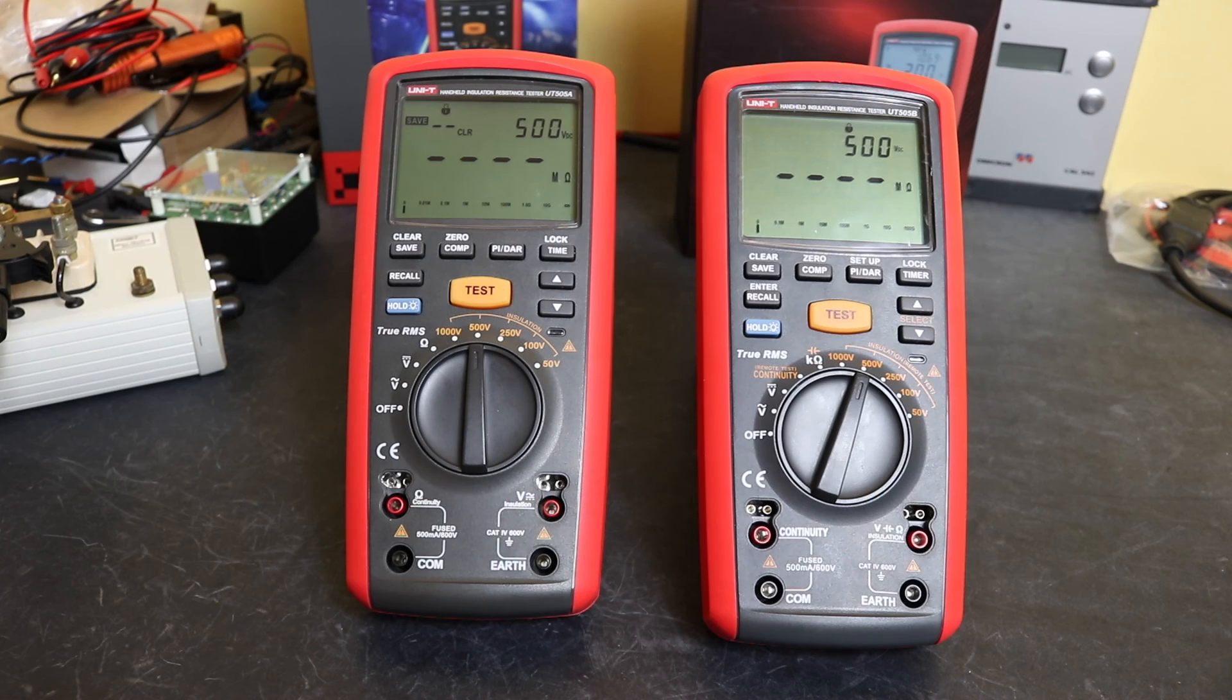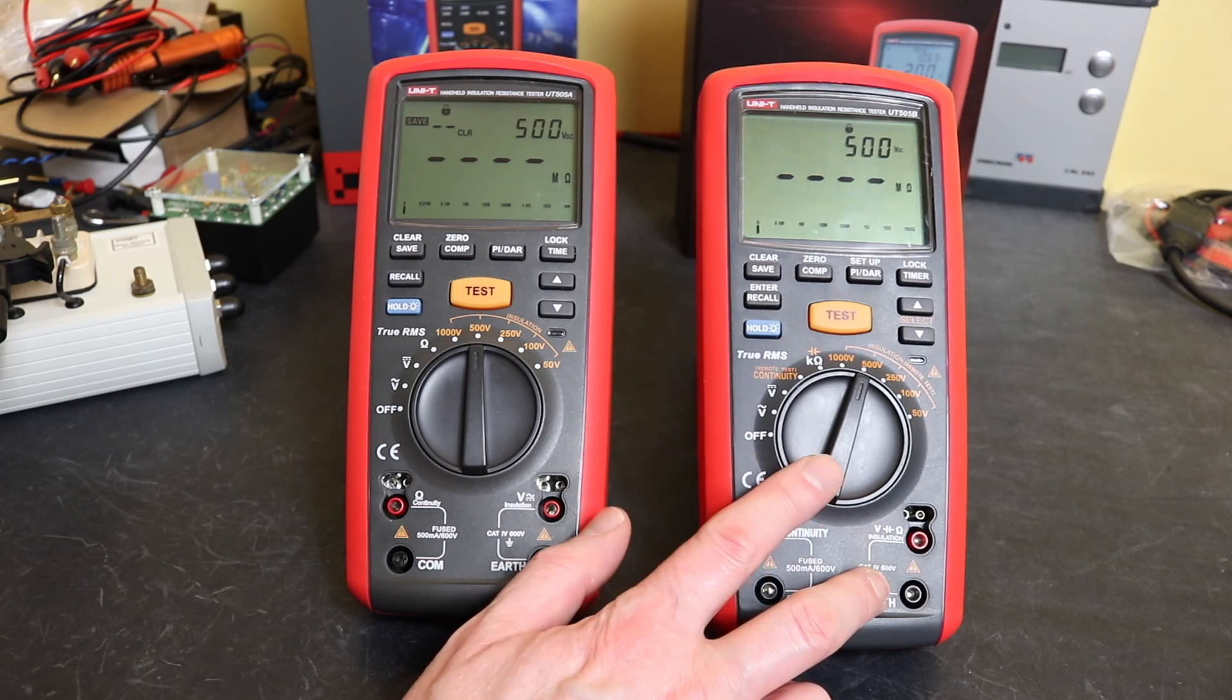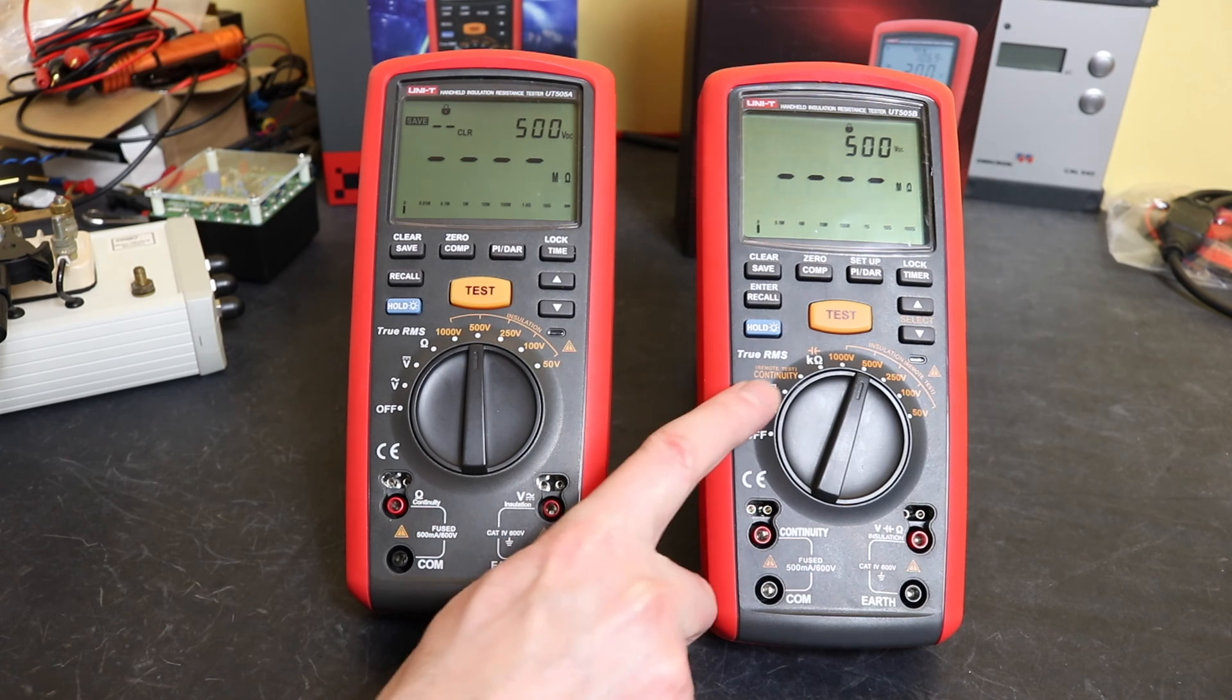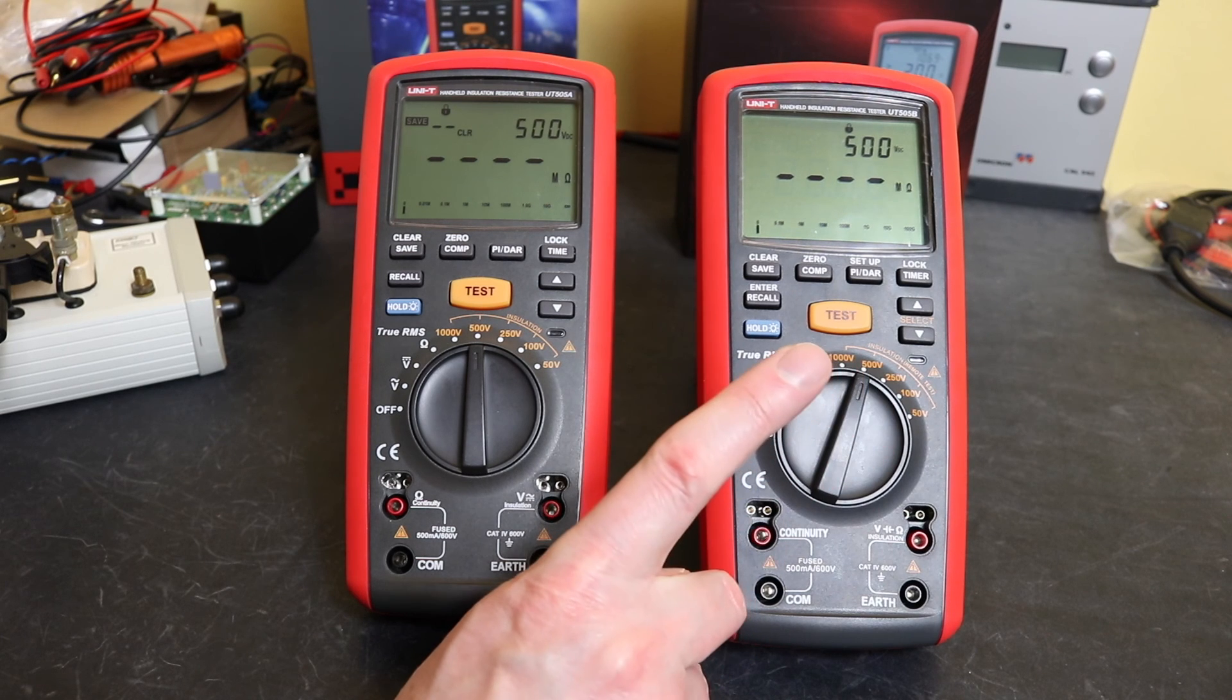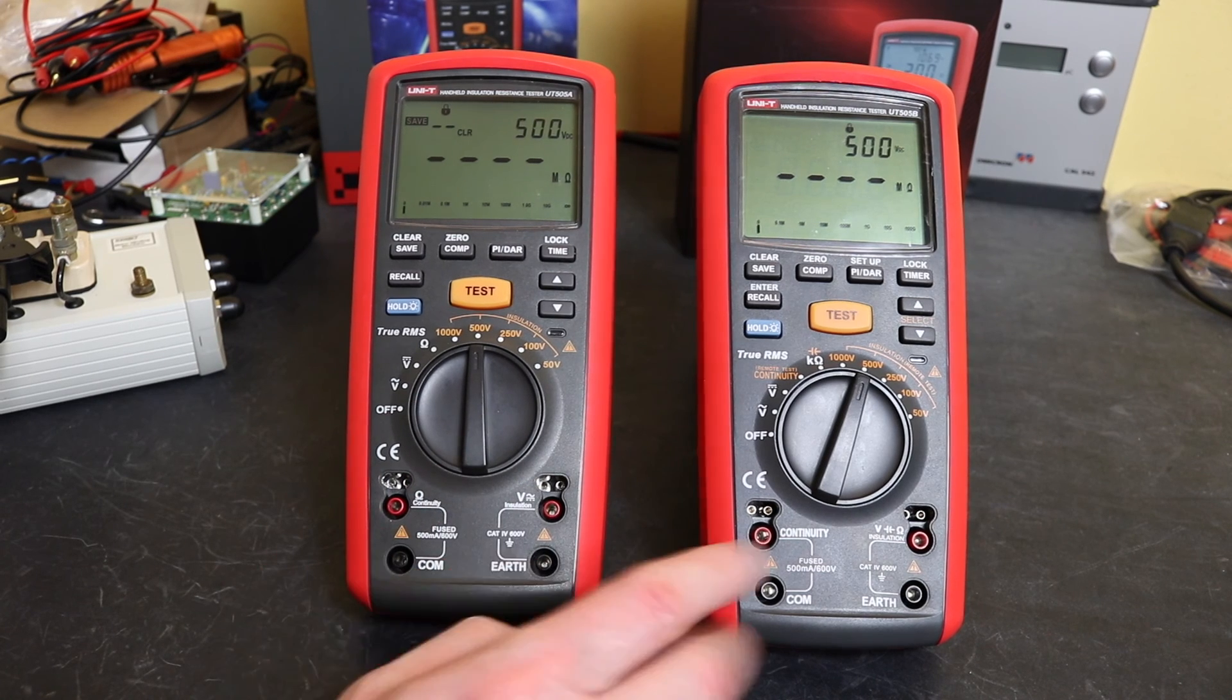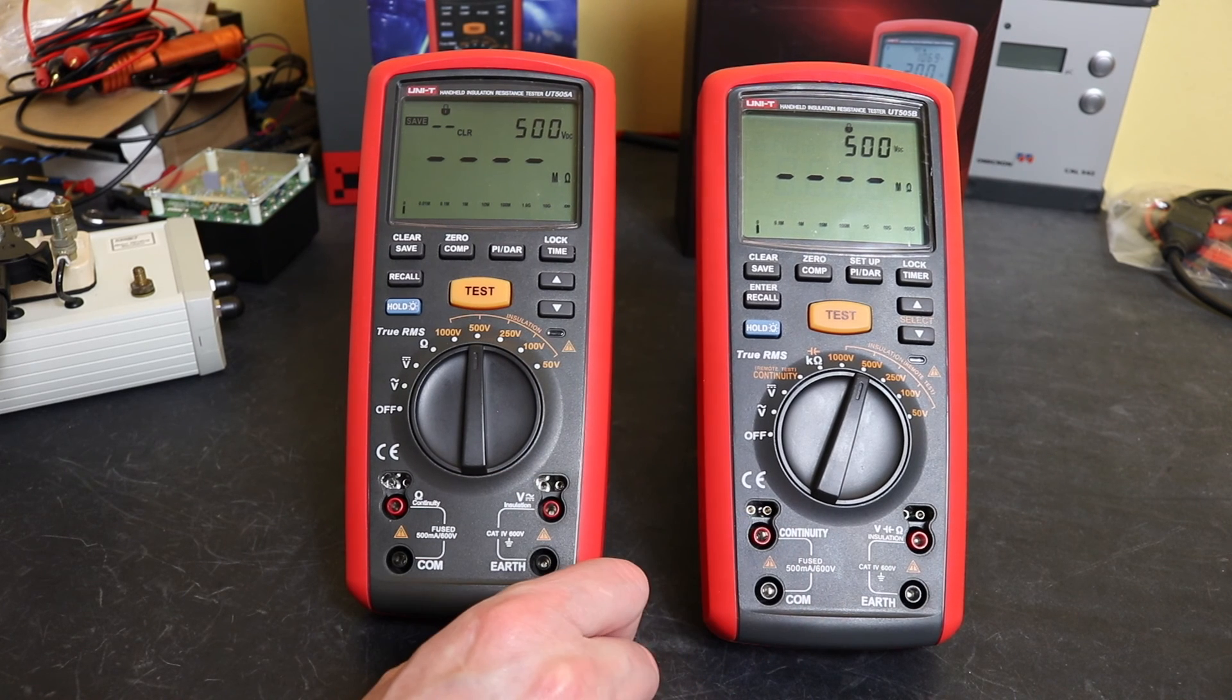So that's the two instruments there. For me personally, I would go down the UT505B route because it gives me much more extended range with the insulation test function, and I prefer the way the PI and DAR do operate. There is the issue with the continuity that you can sort out with a capacitor as I showed in a previous video. Probably what I should do is break these both open at some point and see if there's a difference between the two circuits, because it's strange that this doesn't have any issue with the continuity function when I've tested stuff. I've only seen it on this instrument here.